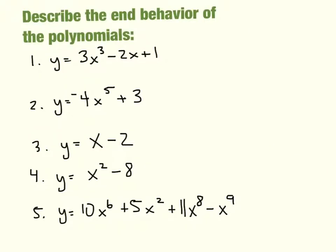Let's do a few examples together where we describe the end behavior of the polynomials. The very first one: y equals 3x cubed minus 2x plus 1. The first thing I look at is the leading coefficient — 3. Is that positive or negative? It's positive, so I know the graph will end on the right going up. Then I look at the degree of the polynomial: the degree is 3, that's odd, so they have to go in opposite directions. That's the end behavior of 3x cubed minus 2x plus 1.